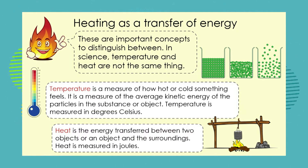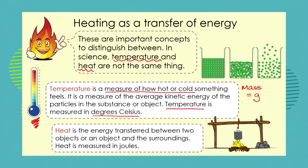These are important concepts to distinguish between. In science, temperature and heat are not the same thing. Temperature is what we use a thermometer to measure, and it is a measure of how hot or cold something is. We could put a thermometer into a cup of water and measure how hot or how much energy it has. Temperature is measured in degrees Celsius, just like mass is measured in grams or kilograms. So temperature is a measure — it's a way of working out how much heat energy a particular object or substance has.